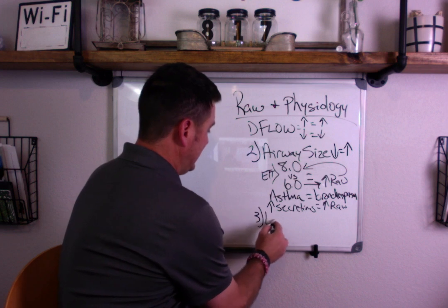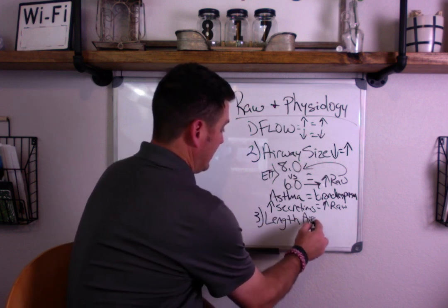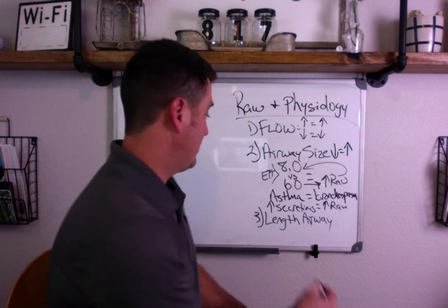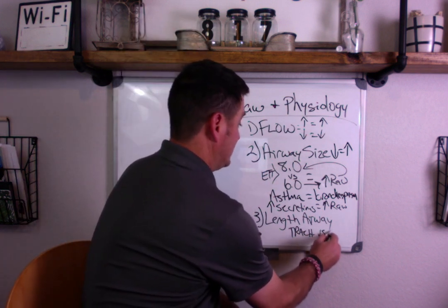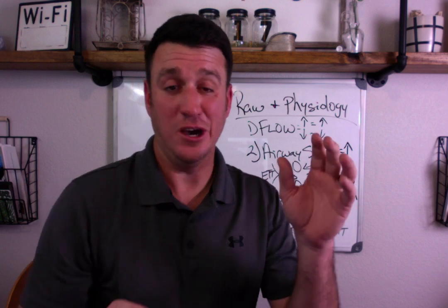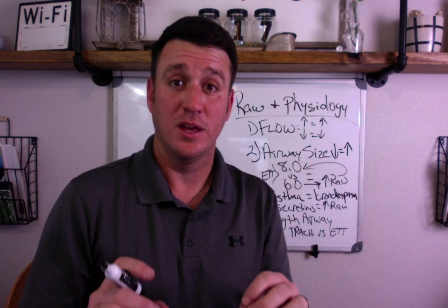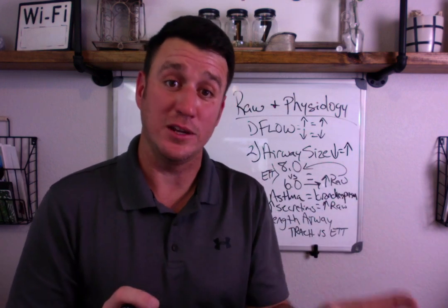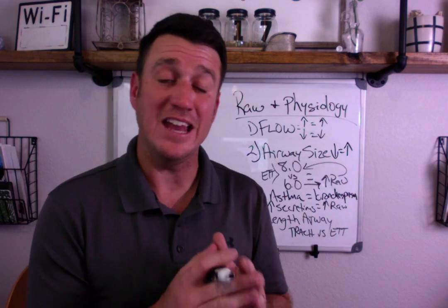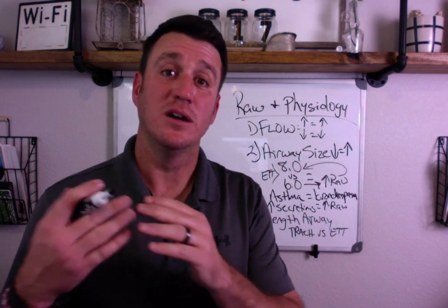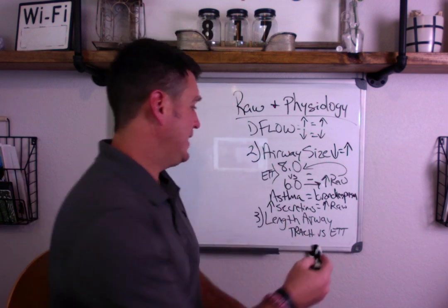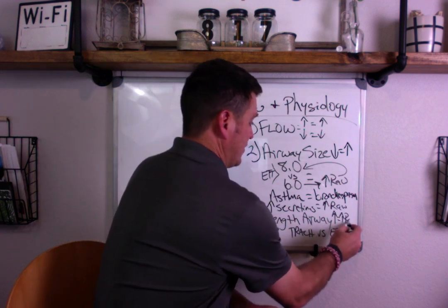The last component is length of airway. This comes down to trachs versus endotracheal tubes. If you have a patient with an 8.0 trach versus a patient with an 8.0 endotracheal tube — everything else constant — the patient with the endotracheal tube will have higher airway resistance because their airway is much longer. That 8.0 endotracheal tube is much longer than an 8.0 tracheostomy tube. So if airway length increases, you get an increase in airway resistance.